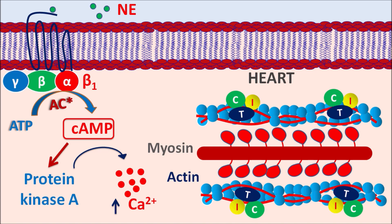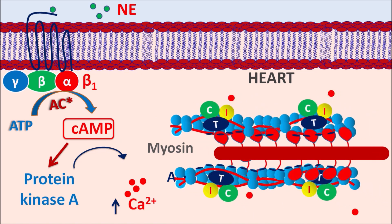Generally the actin and myosin cannot produce contraction because of a block due to troponin. Calcium binds to this troponin complex, thereby producing contraction within the actin-myosin filaments. In this way cyclic AMP produces contraction of the cardiac muscle through activation of protein kinase A. Sympathetic mediators like epinephrine and norepinephrine produce cardiac stimulation through beta-1 receptors, increasing the rate and force of contraction, resulting in increased blood pressure as well as increased cardiac oxygen consumption and cardiac work.